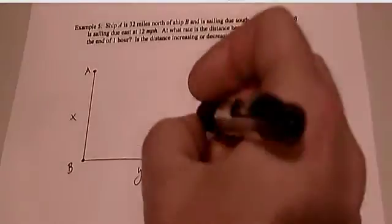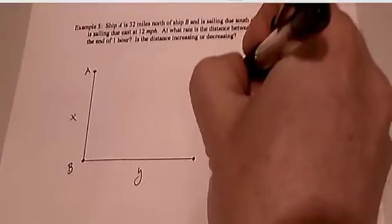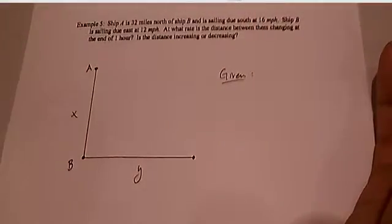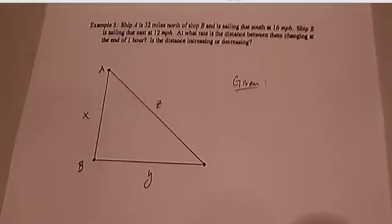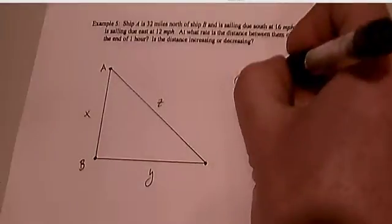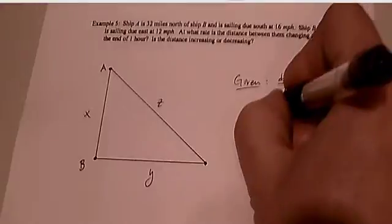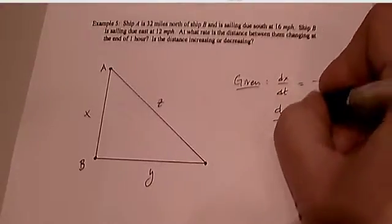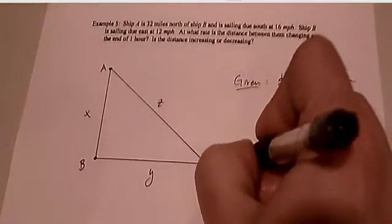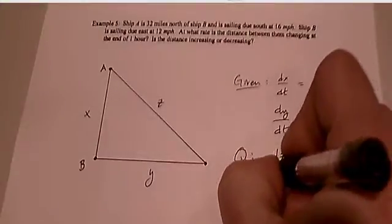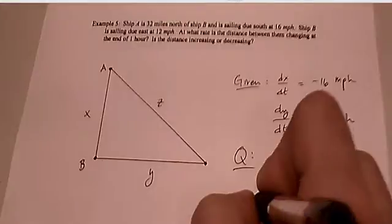Now, if it's 32 miles north of ship B and is sailing due south, that isn't part of really the given information, it's kind of where it starts out and that can help us out. So ship B is sailing due east at 12 miles an hour. At what rate is the distance between them changing at the end of one hour? So the given information is the fact that dX/dt is changing at negative 16 mph. dY/dt is changing at positive 12 mph. The question is, what is dZ/dt? And of course, the condition is after one hour.